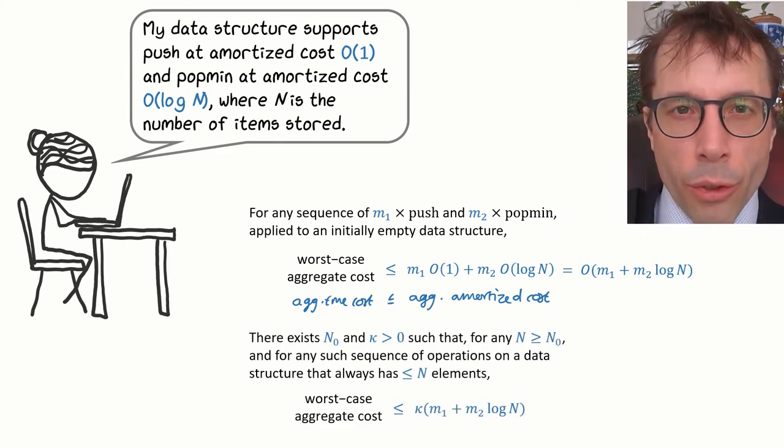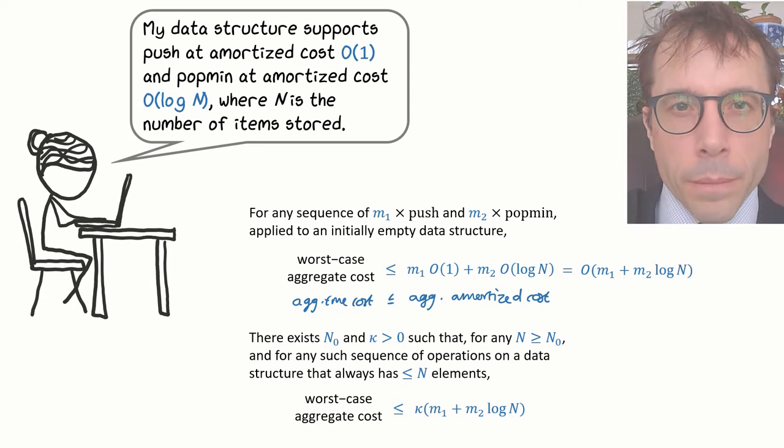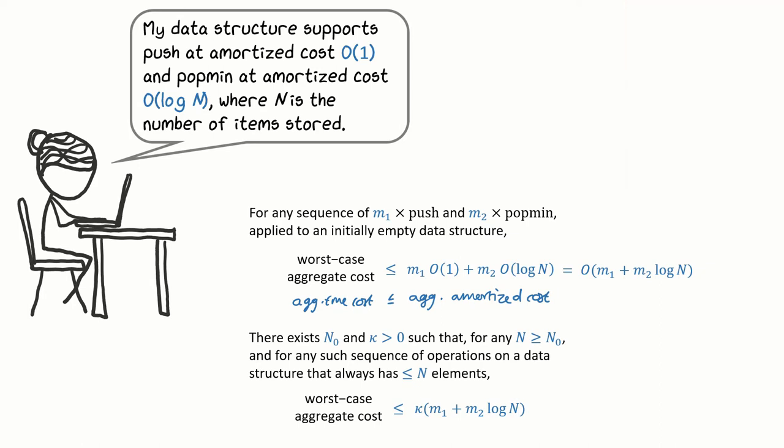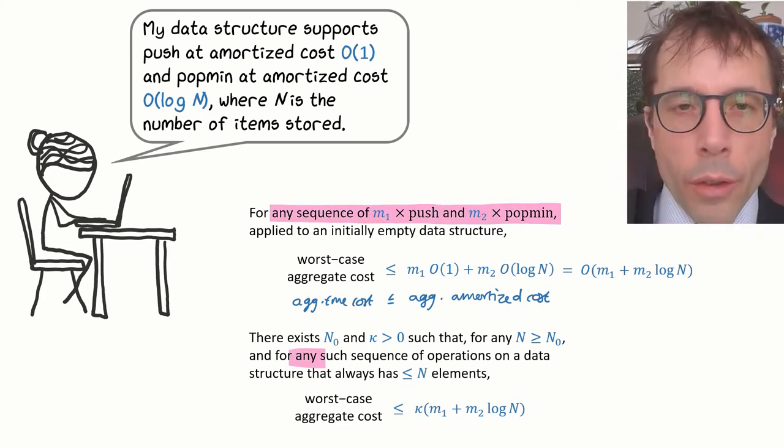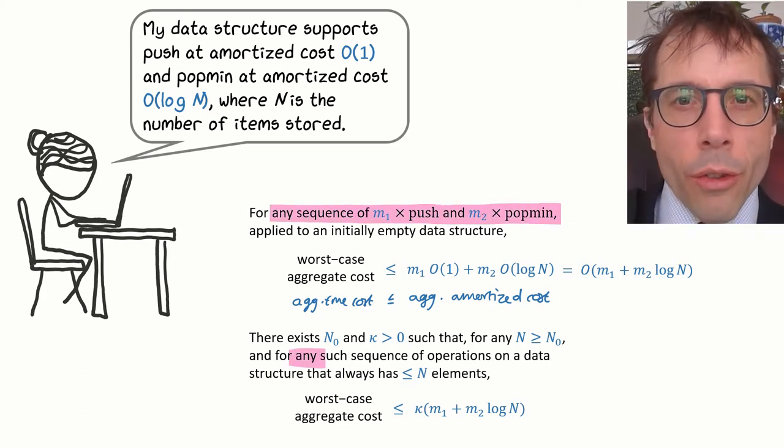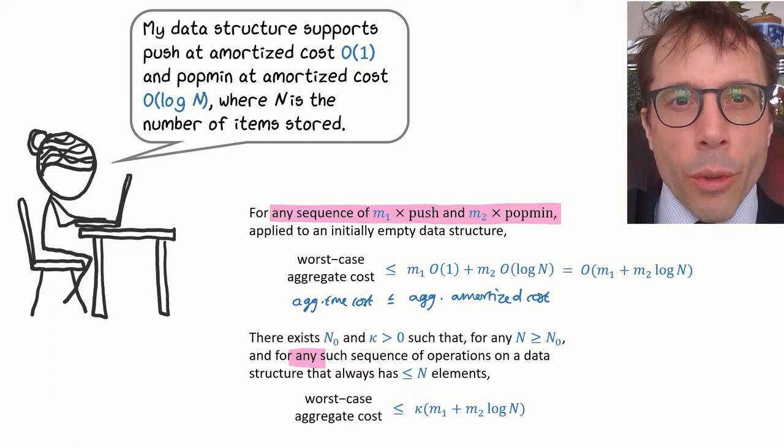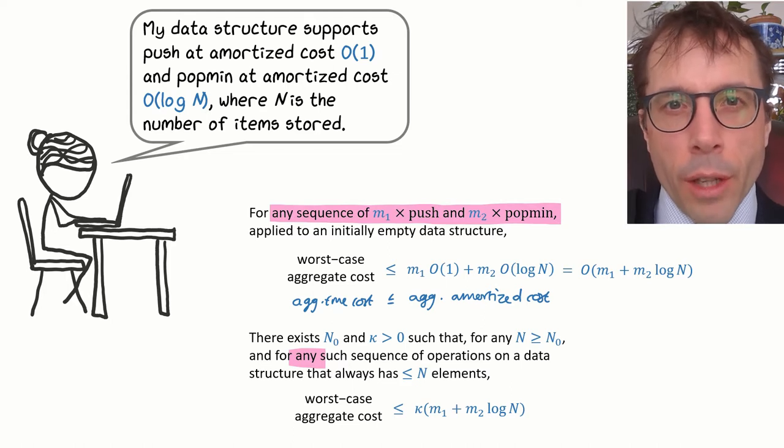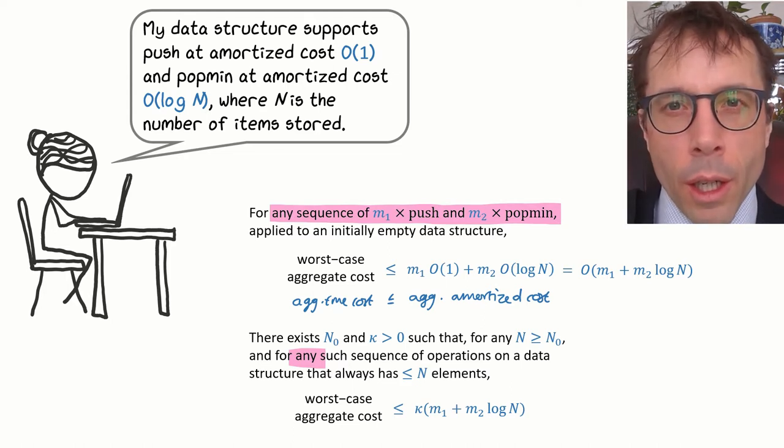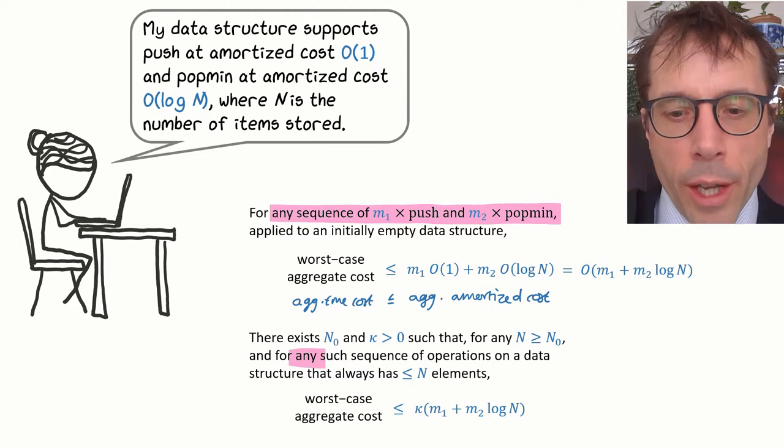Again, please pause the video, copy this out, and play when you're ready. The key phrase in all of this is 'for any sequence.' What we've written is a big O statement, which means that we're talking about an upper bound that applies to sufficiently large N. But the upper bound has to apply to any m1 and m2.